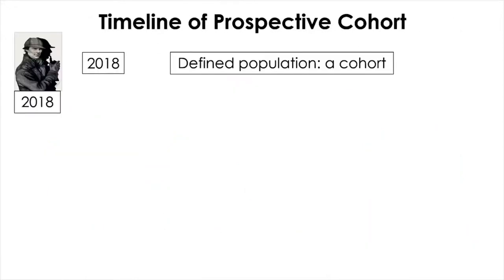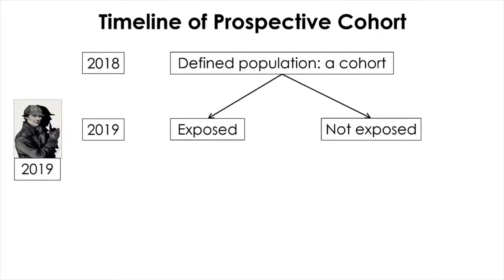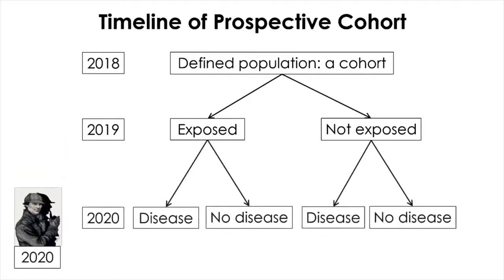Here we have a cartoon depiction of prospective cohort design. We have Sherlock, our disease investigator, in 2018. Let's imagine that we started our prospective cohort study in that year. The first thing we need to do is to find a proper cohort for the study. Once you do that, you're going to divide this cohort into two groups by examining their exposure status. Let's say that you completed this examination in 2019. Now you'll follow them up into 2020 to see what happens — some people will develop the disease or not, and you'll estimate the relationship between the exposure and the outcome.